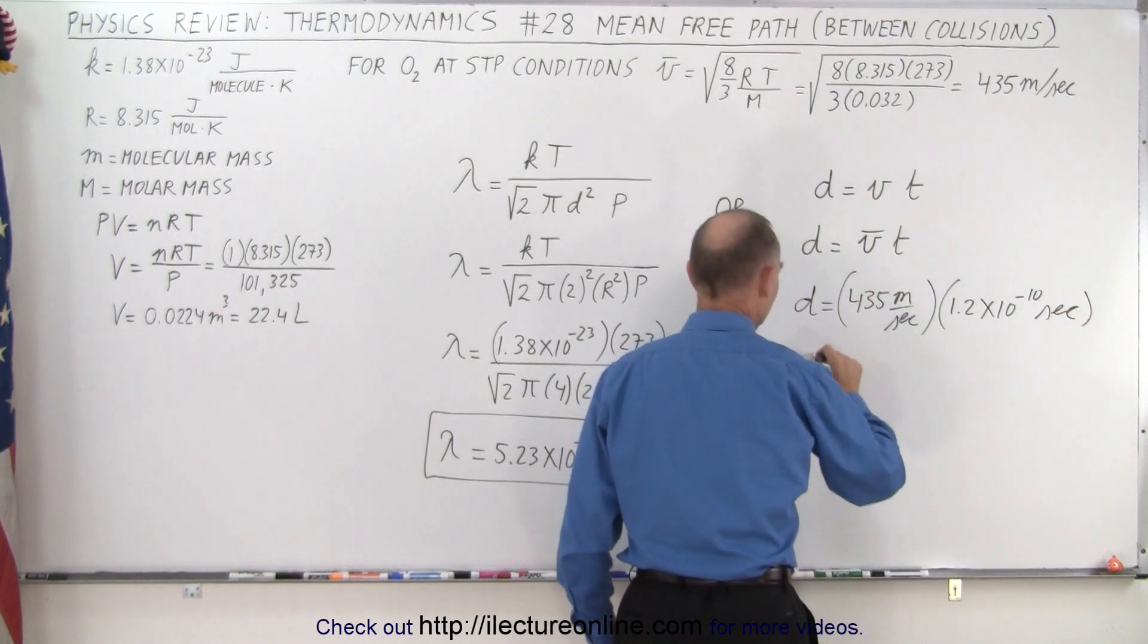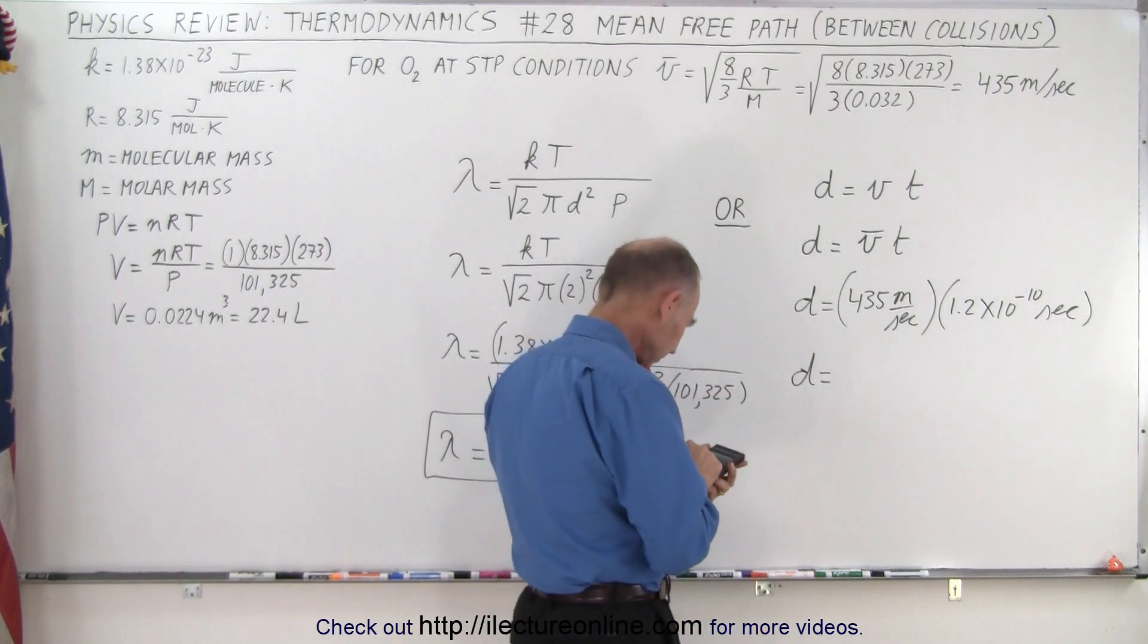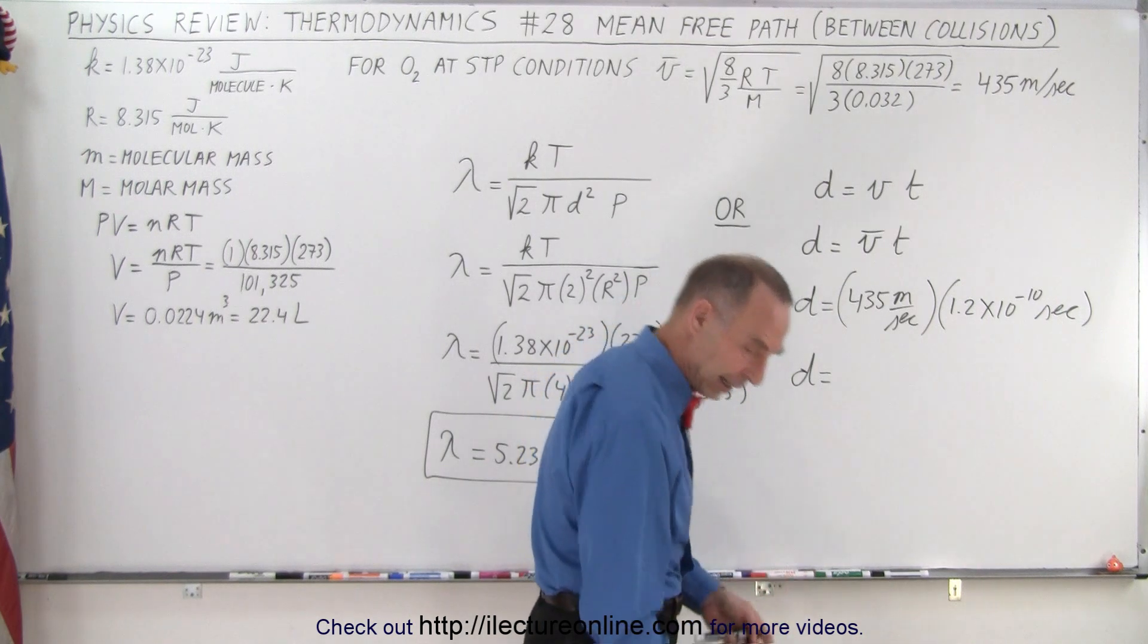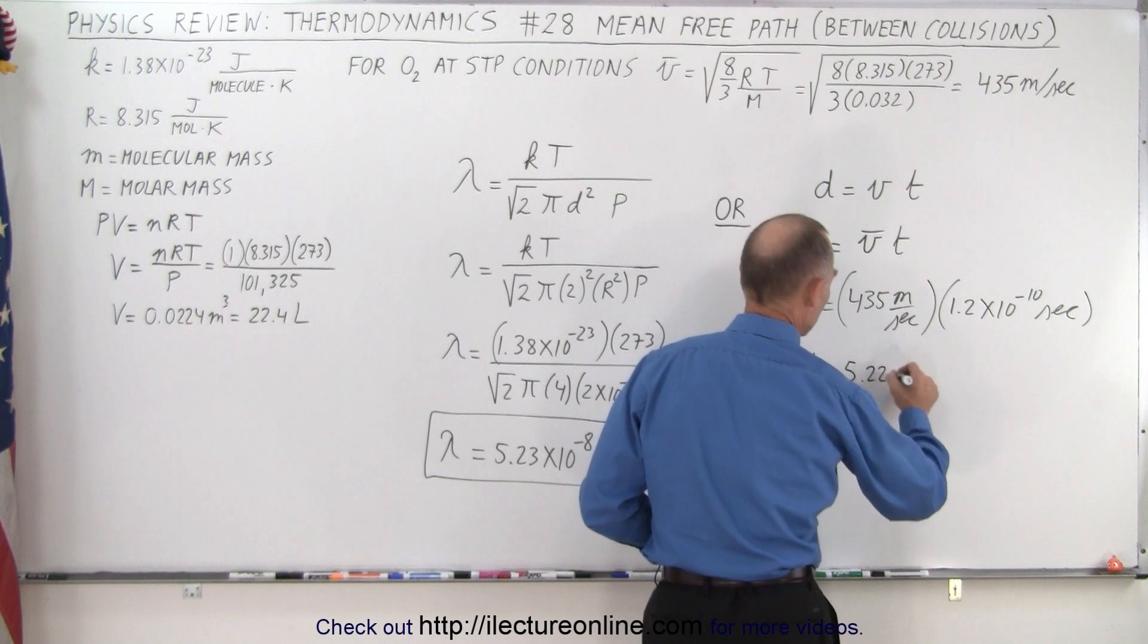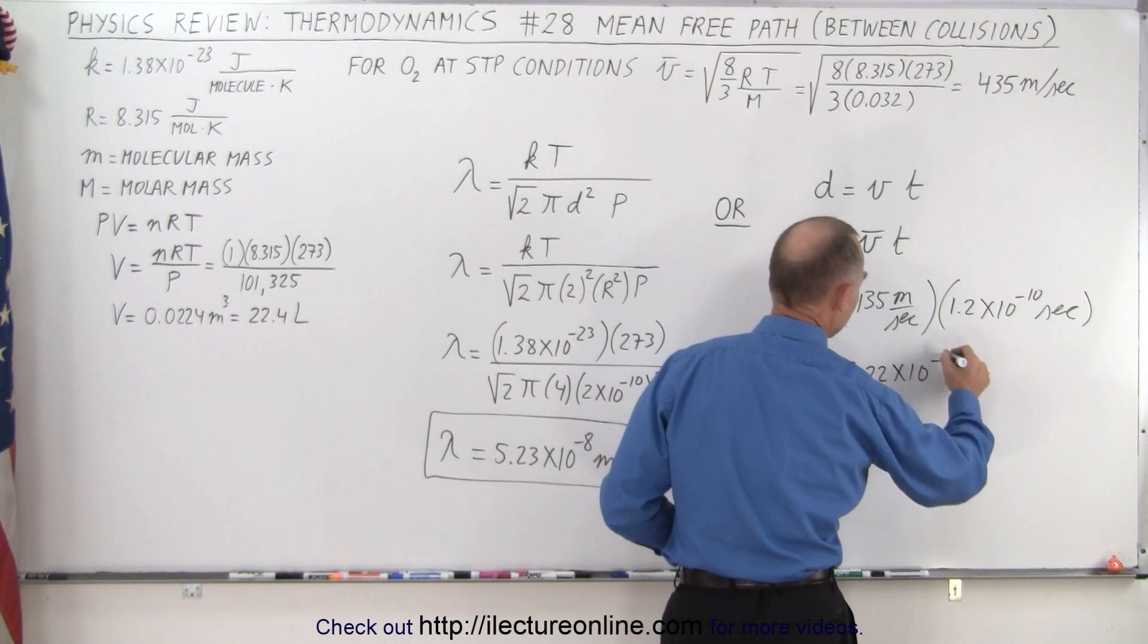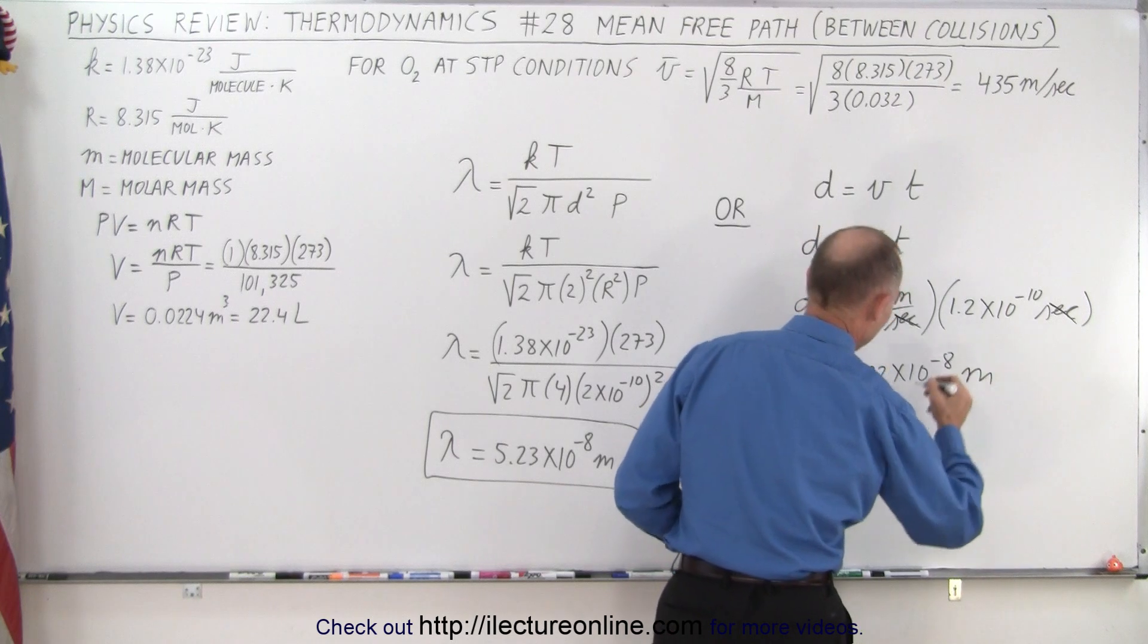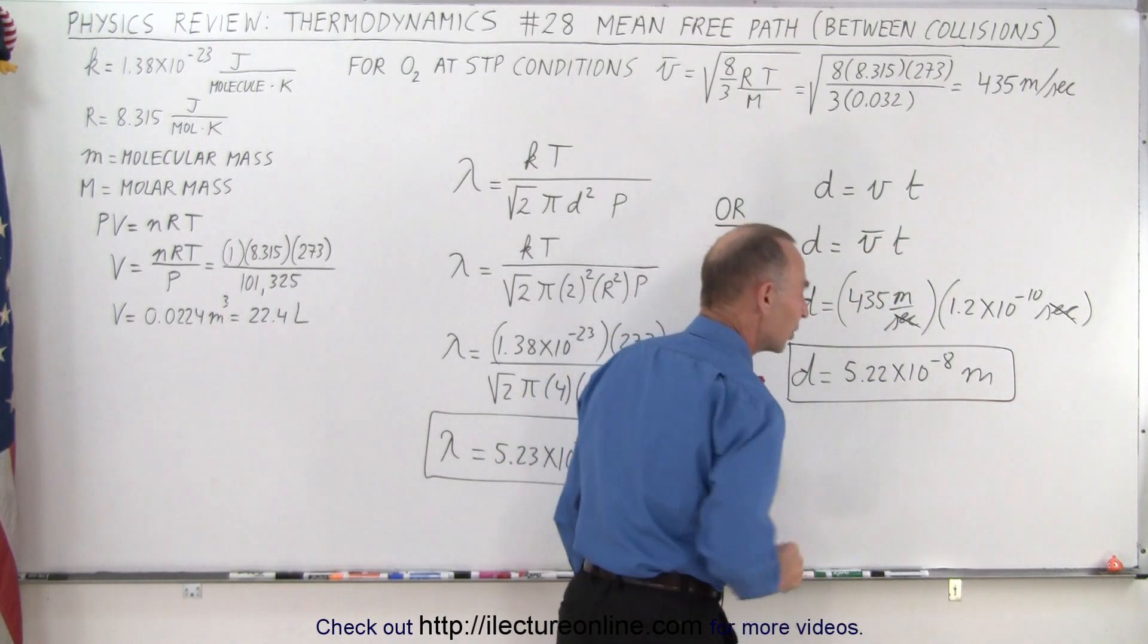And so the distance is equal to 435 times 1.2 e to the minus 10 equals, and that ended up being 5.22 times 10 to the minus 8. Notice seconds cancel out, so we're left with meters, and the fact that we have meters indicates, at least dimensionally, we have the equation correct.